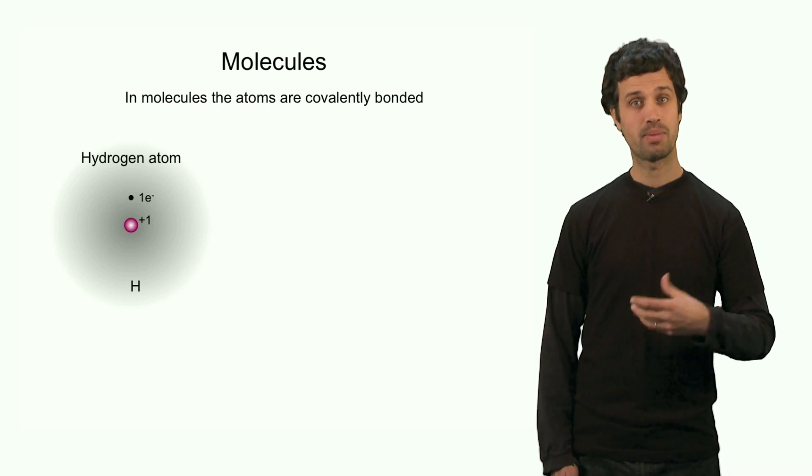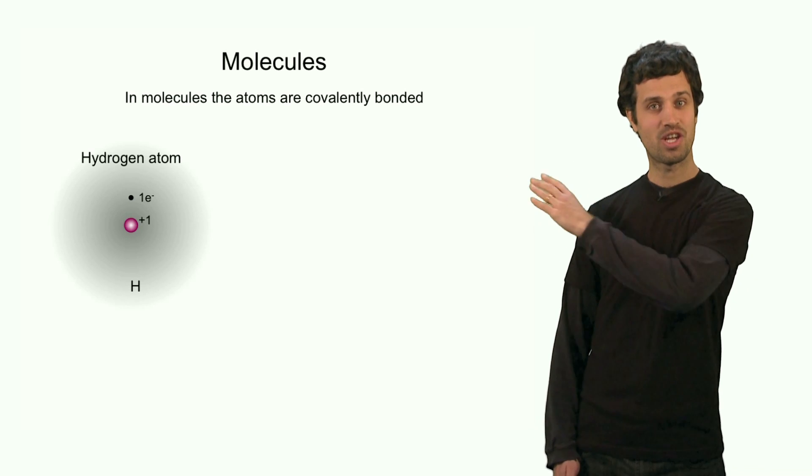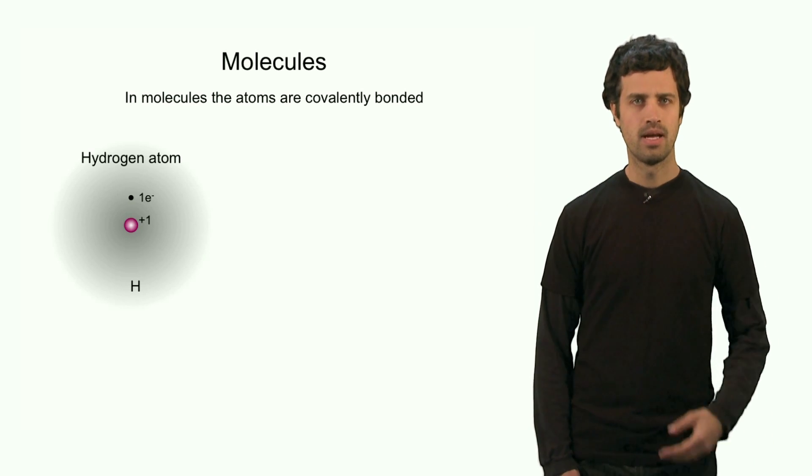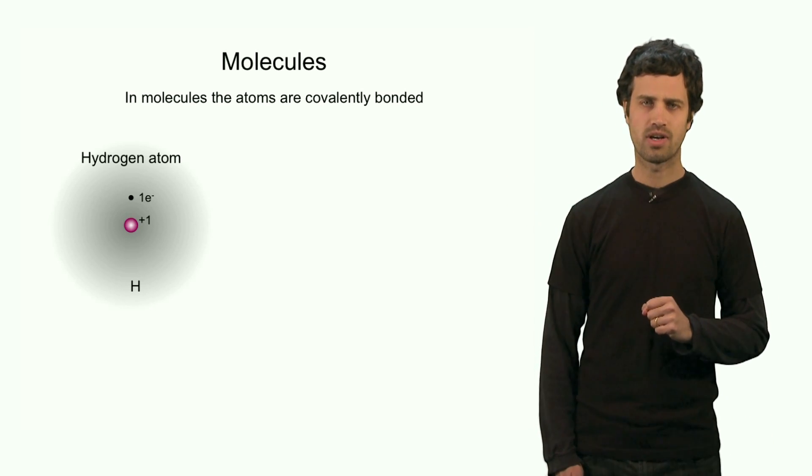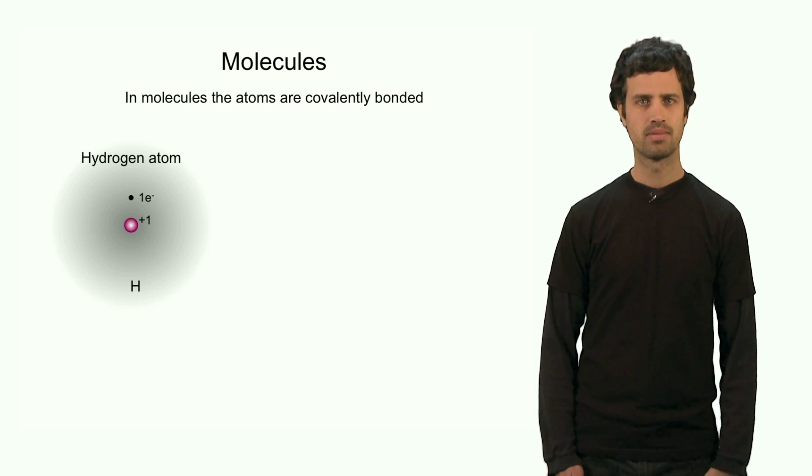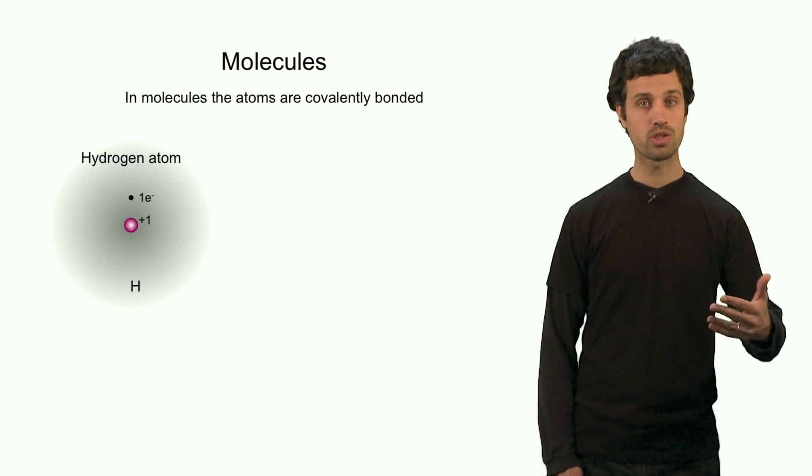Now, the location of this electron is defined by the wave function, which is indicated here by the shaded area. Now, what happens to the location of the electron when we put another atom close to it? Let's say another hydrogen atom. The second hydrogen atom also has an electron.